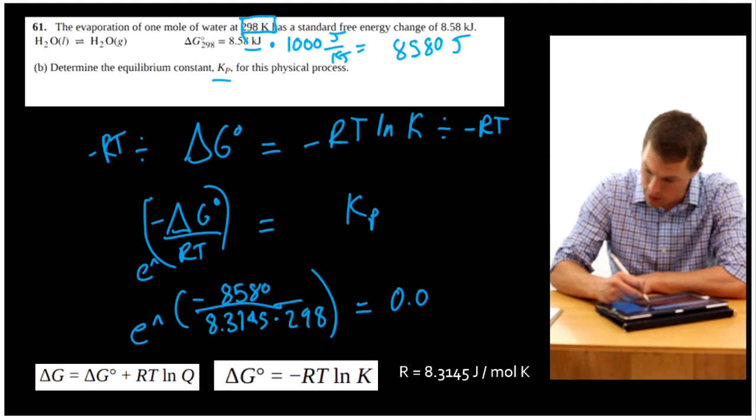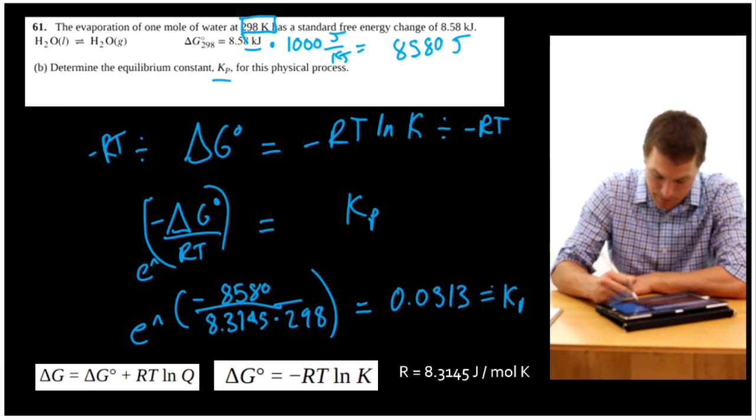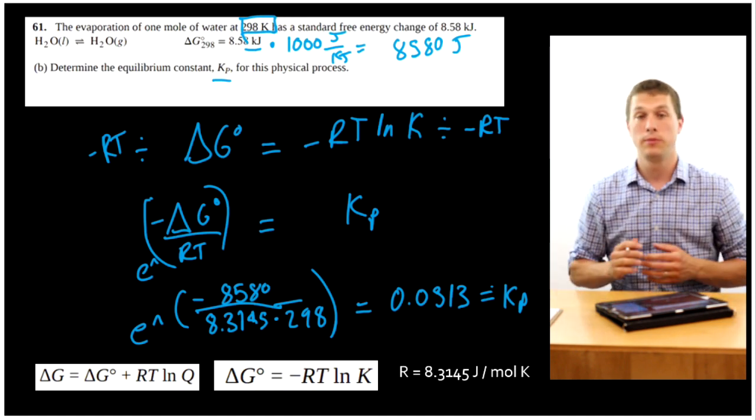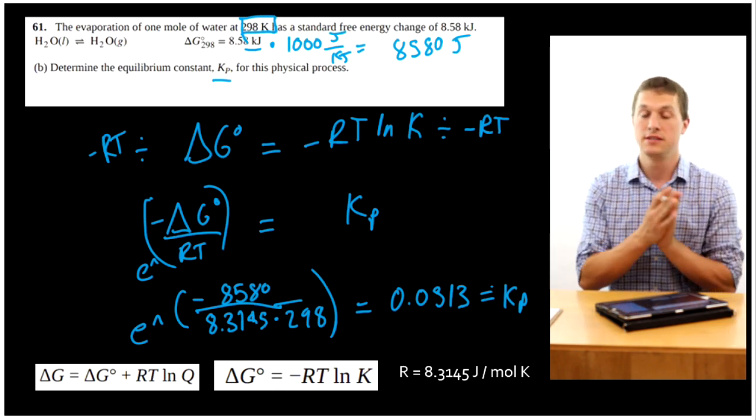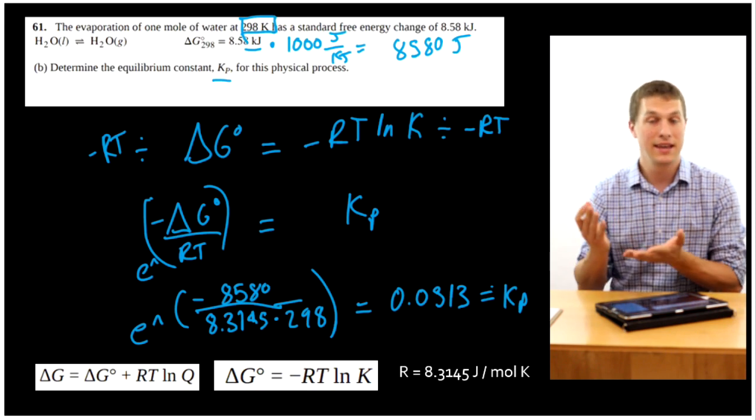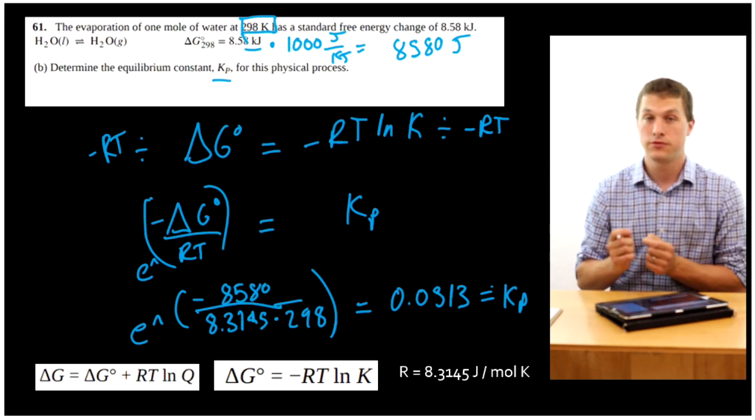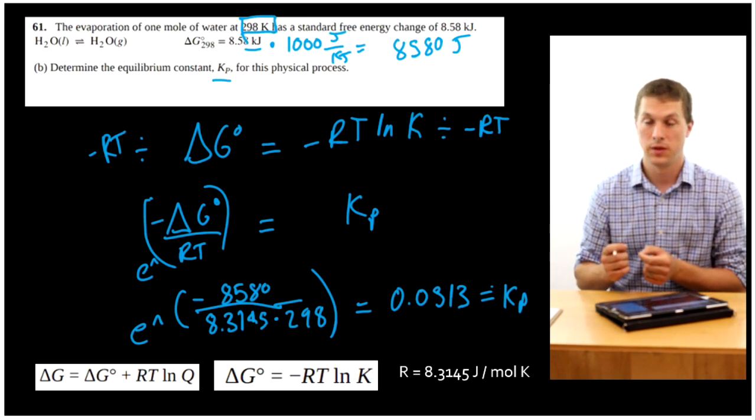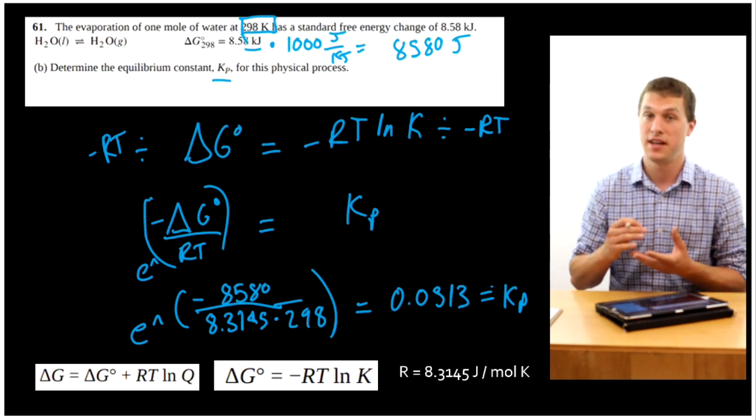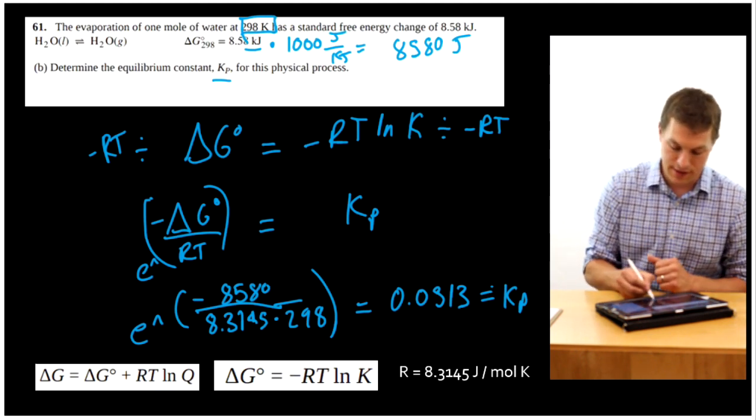So when I plug all that in, I'm going to get 0.0313 for my Kp. Okay, so that's my equilibrium constant. That's telling me about the balance of reactants and products at equilibrium, and I can get that straight away from my Gibbs free energy at standard state because if my Gibbs free energy for non-standard state is set to zero, then I get this equation.